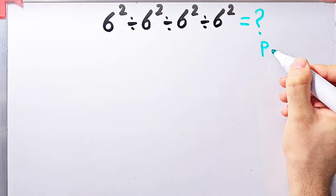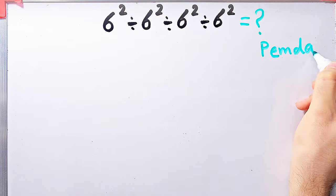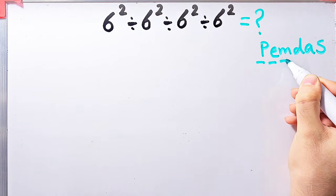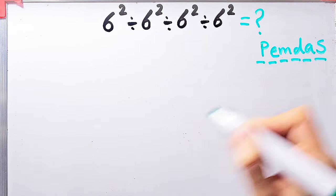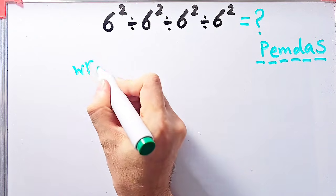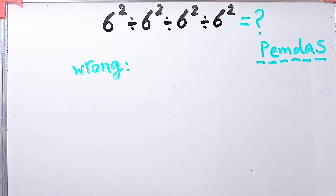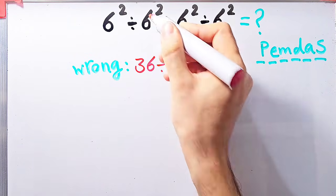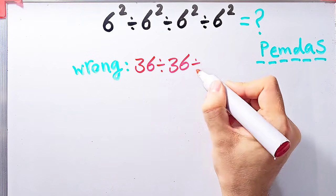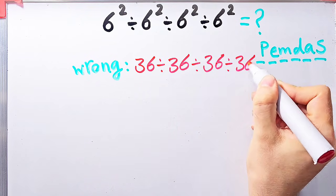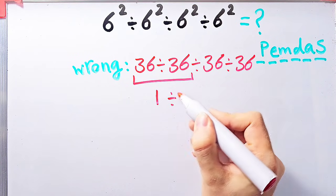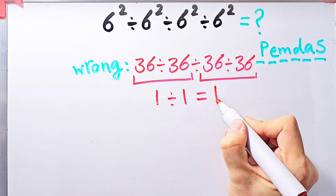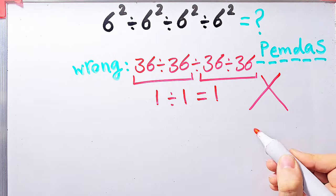To solve this question we need to follow the PEMDAS rule: P for parentheses, E for exponent, M for multiplication, D for division, A for addition, and S for subtraction. In the wrong way of solving this question, some people compute 6 to the power of 2 equals 36, then 36 divided by 36 equals 1, then 1 divided by 36 divided by 36, and say the final answer equals 1. But this answer is definitely wrong.